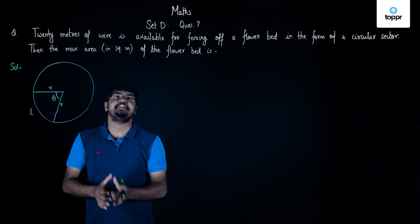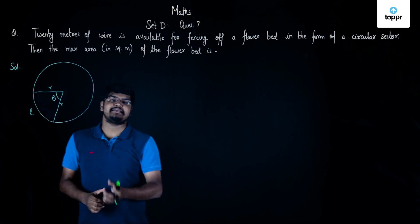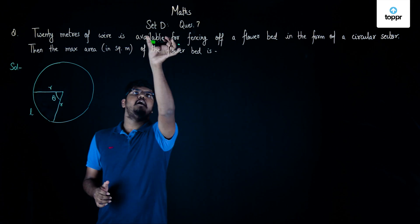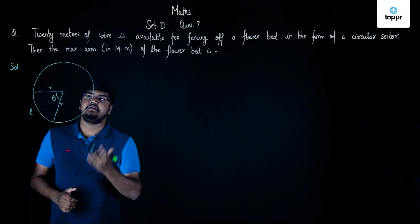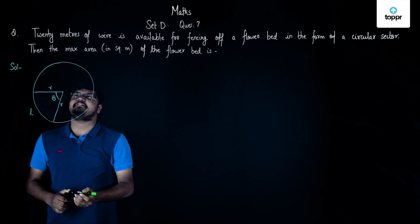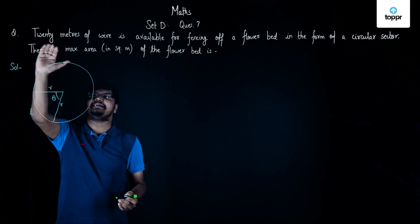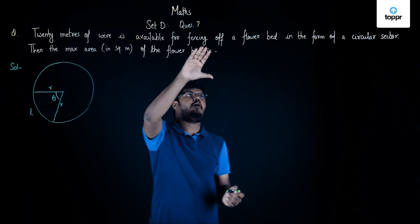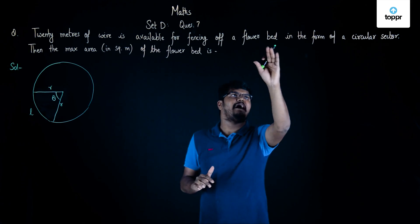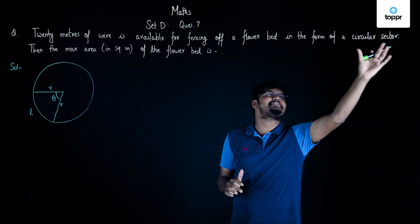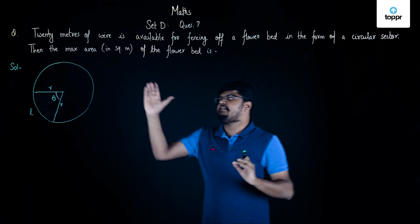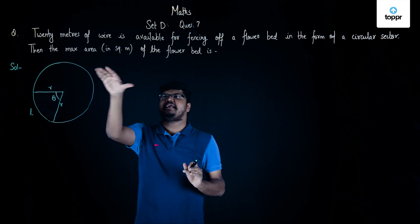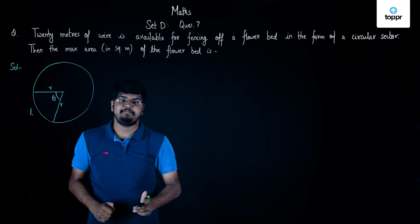Hey guys, in this video we are going to discuss the solution of question number seven of ZD mathematics. The question given to us is: 20 meters of wire is available for fencing of a flower bed in the form of a circular sector. We have to find the maximum area in square meters of the flower bed.